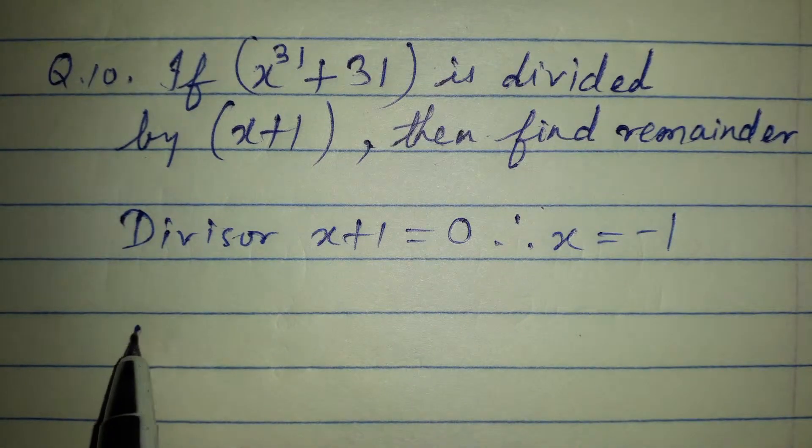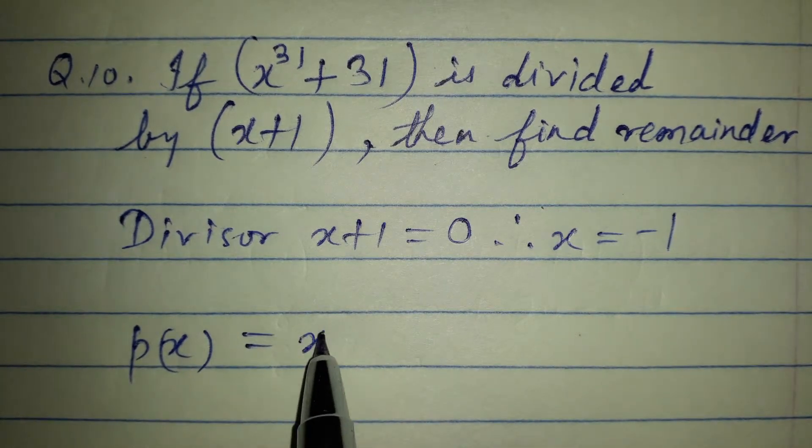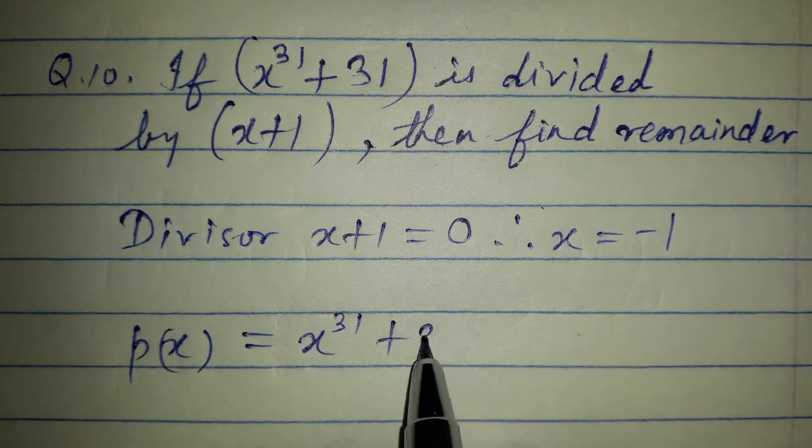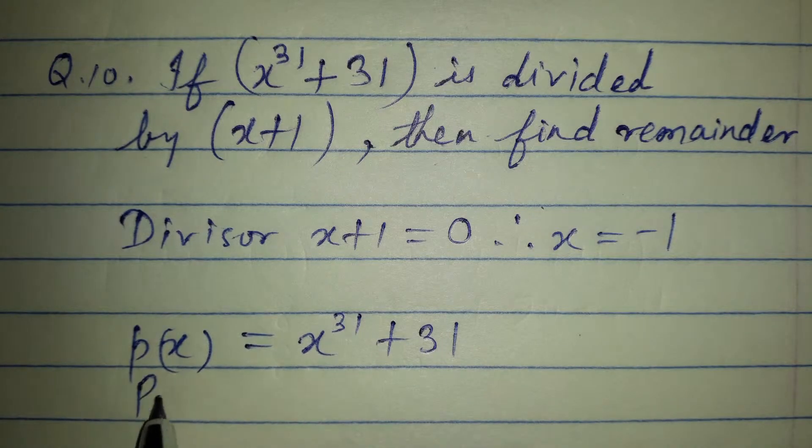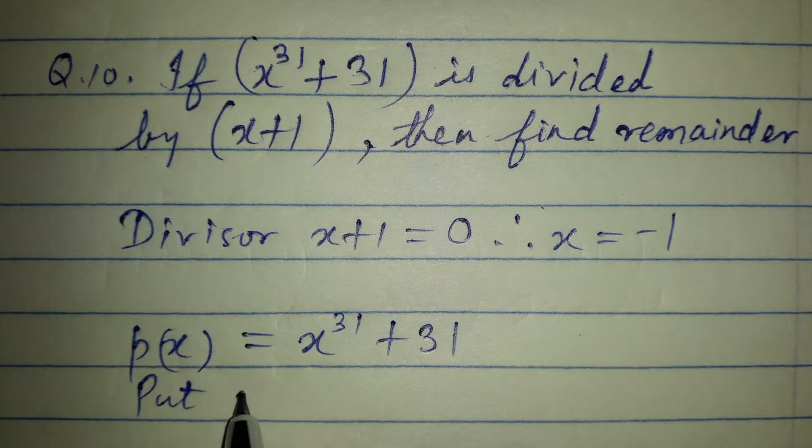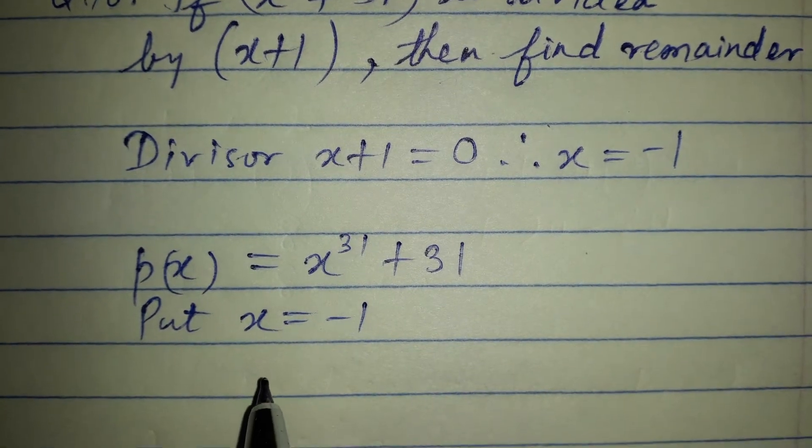We have the polynomial, that is p of x equal to x raised to 31 plus 31. Here we will put the value of x equal to minus 1.